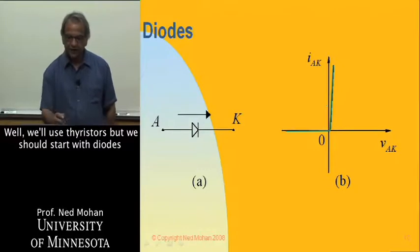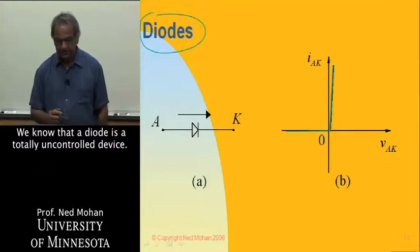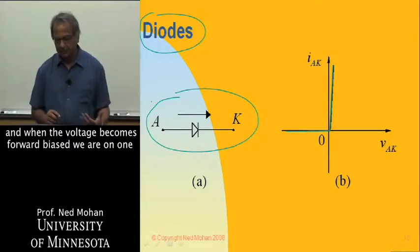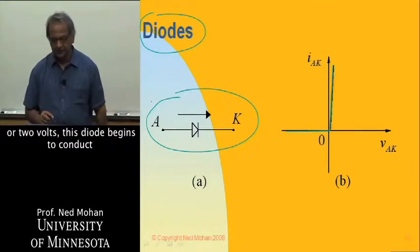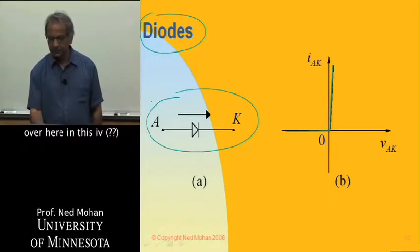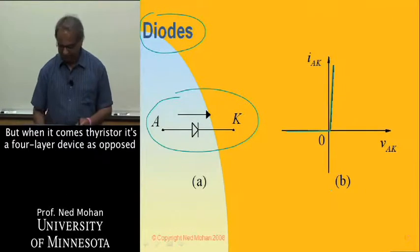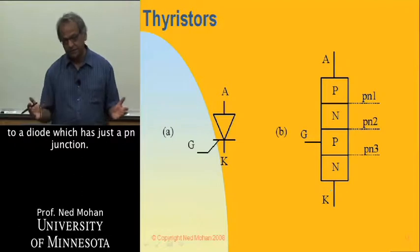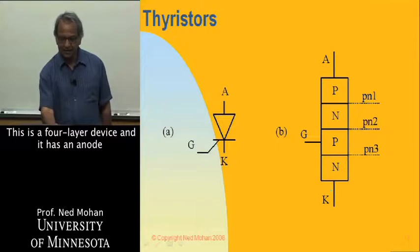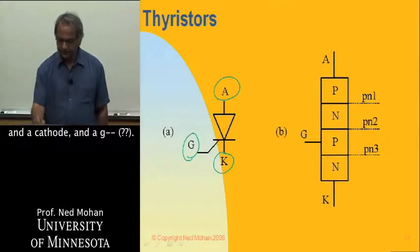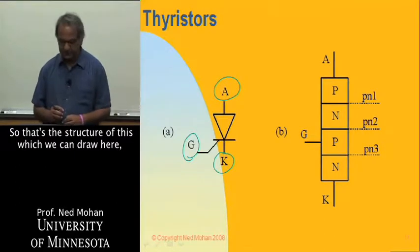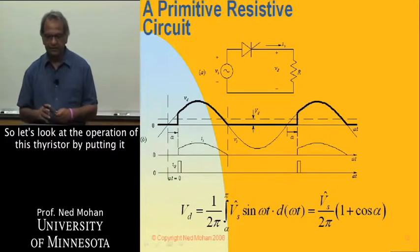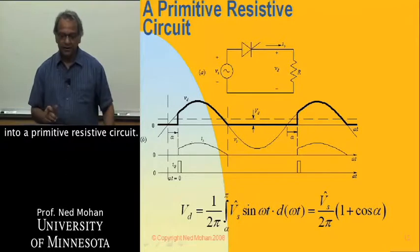We'll use thyristors, but we should start with diodes in order to learn how thyristors behave. A diode is a totally uncontrolled device — it has an anode and a cathode, and when the voltage becomes forward biased beyond one or two volts, the diode begins to conduct in the forward direction, as shown in its IV characteristic. A thyristor, by contrast, is a four-layer device as opposed to a diode which has just a P-N junction. It has an anode, a cathode, and a gate.